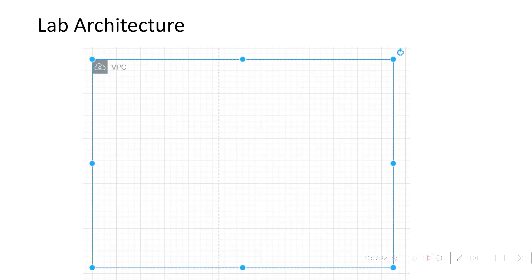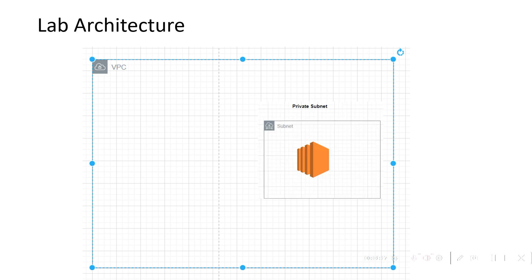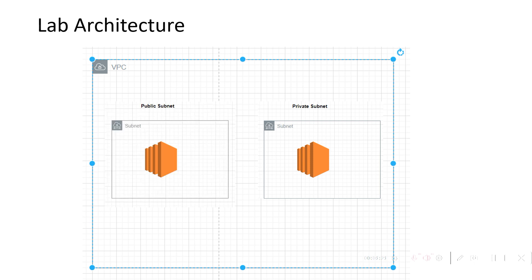We are going to create one VPC, and inside this VPC we will be creating one private subnet and deploying one EC2 machine. After that, we will be deploying one public subnet and inside that we will be creating one EC2 machine. We will be using this public EC2 machine as a jump box to log in to the private EC2 machine. Up to this point, the infrastructure is already deployed and we are going to reuse it.